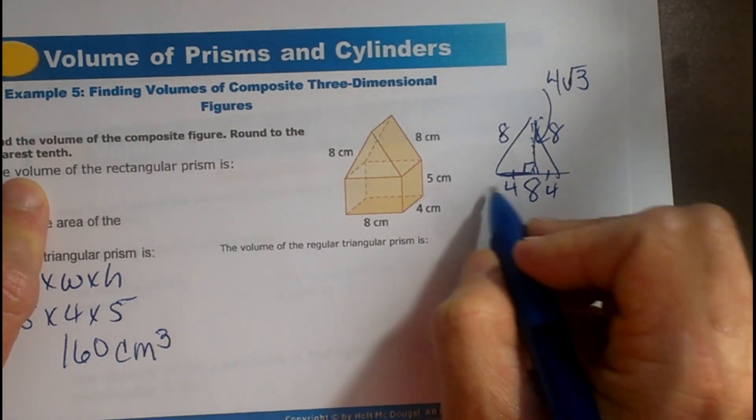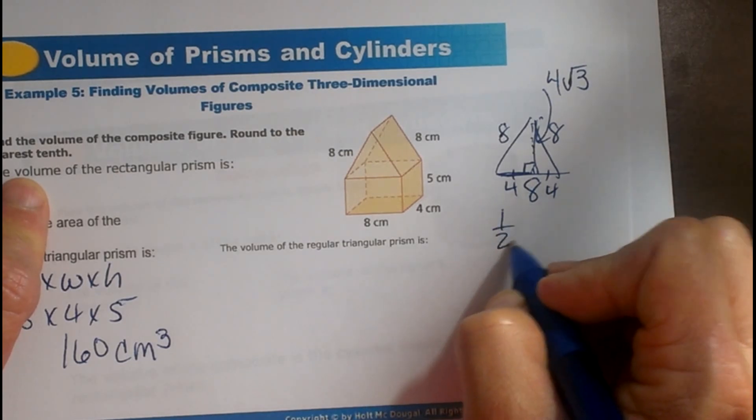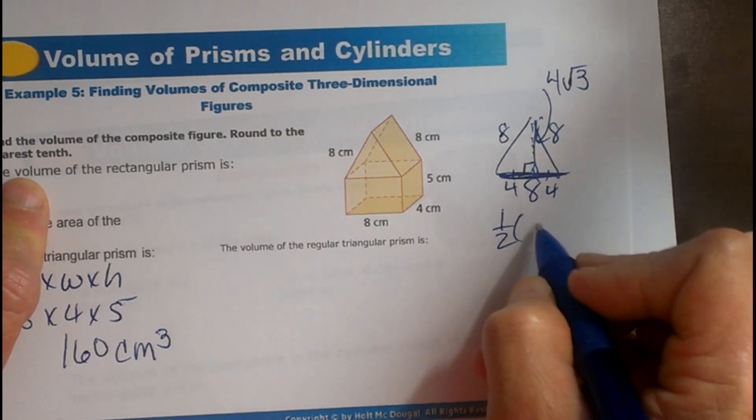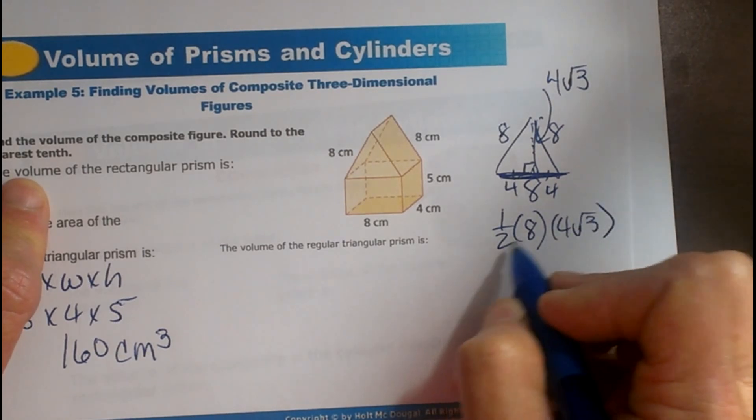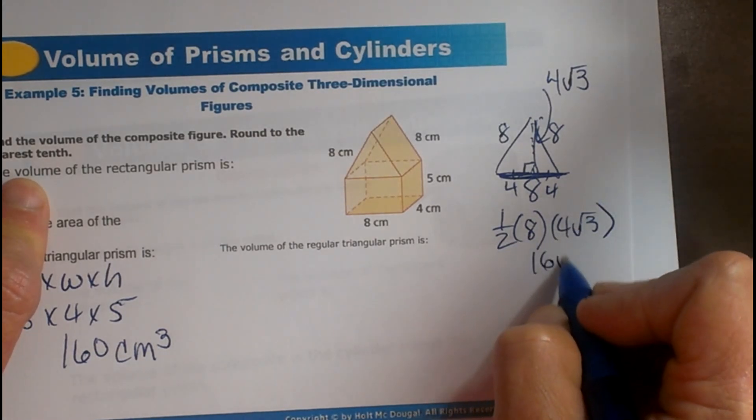So let's find the area. It's one-half the base. We're going to use the whole base of the triangle: one-half of 8 times the height, which is 4 root 3. So one-half of 8 is 4, and 4 times 4 is 16 root 3.